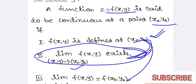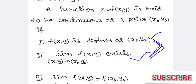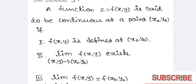I hope that is clear. The theme of continuity of functions of two variables: first, the function should be defined at (x₀, y₀); second, the limit should exist; and third, both should be equal. Then f(x, y) is said to be continuous at (x₀, y₀). Now let's see one problem.